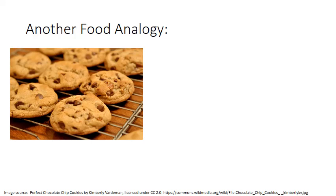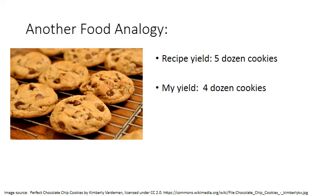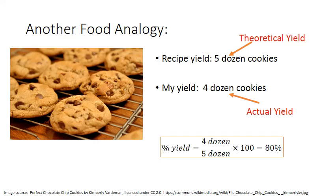Let's use a food analogy. My favorite cookie recipe says it yields five dozen cookies. Every time I make it, I only get four dozen. In chemical reaction terminology, the predicted yield based on recipe amounts is the theoretical yield; what I actually get in my kitchen is the actual yield. Percent yield is actual over theoretical times 100 — four dozen divided by five dozen times 100 — giving 80%. This cookie recipe always gives me an 80% yield.